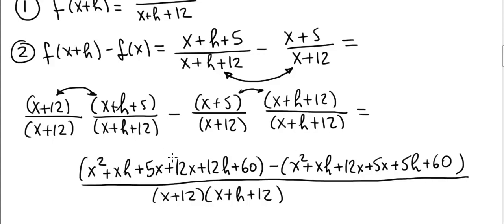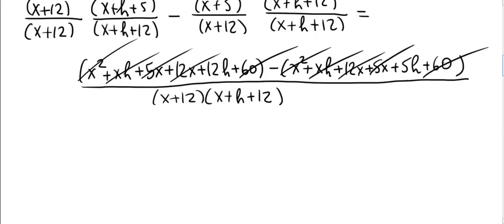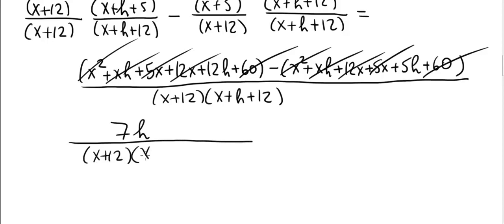Now let's simplify. Everything in the numerator that does not have an h will cancel. In fact, one term with h will also cancel. x squared minus x squared cancel. 5x minus 5x cancel. 12x minus 12x cancel. 60 minus 60 cancel. Even xh cancels with xh. What's left in the numerator is 12h minus 5h, which is 7h. So the numerator is 7 times h, and the denominator is x plus 12 times x plus h plus 12. That's the end of step 2.